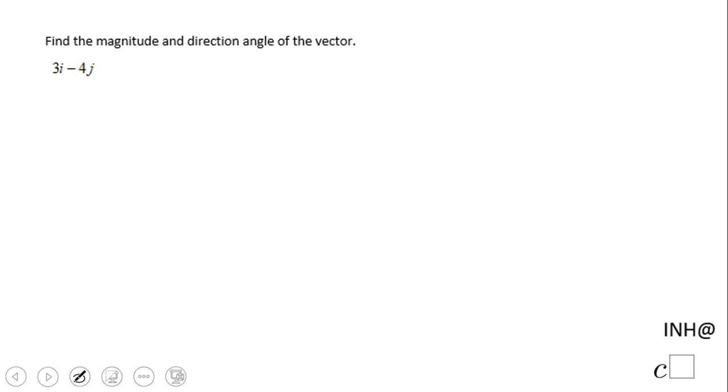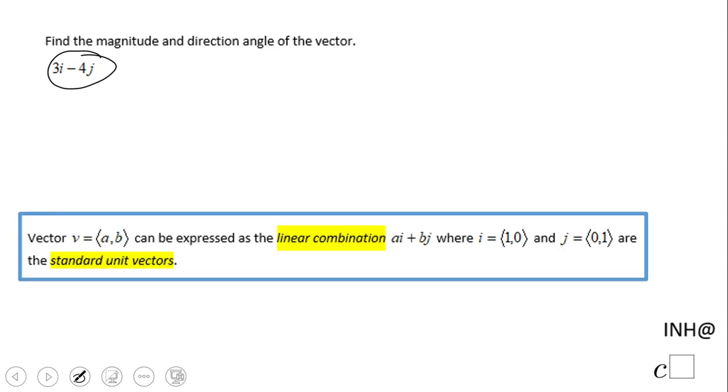Welcome, or welcome back to I Need Help at C Squared. In this example, we're going to find the magnitude and direction angle of a vector. This is another way to see a vector, which we call